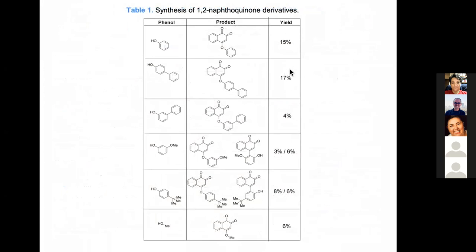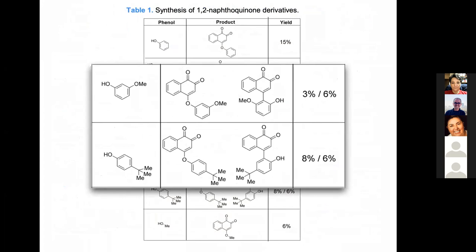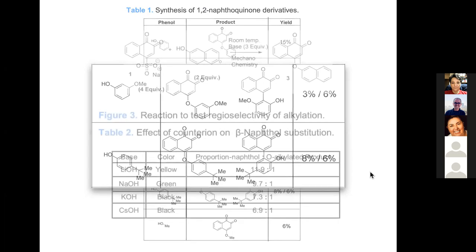Los primeros resultados de Kenneth mostraron rendimientos bajos pero son resultados preliminares. Algo interesante es que, dependiendo del grado de sustitución del fenol, se obtiene no solo la O-alquilación buscada (derivados tipo éter E3) sino también C-alquilación, dando una mezcla. Eso dio la idea de optimizar para obtener solo el producto C-alquilado o eliminar la interferencia del O-alquilado. Se empezó a trabajar con beta-naftol para evitar esa sustitución.